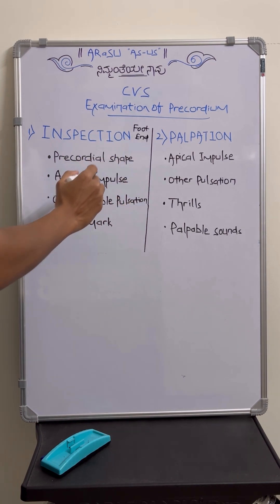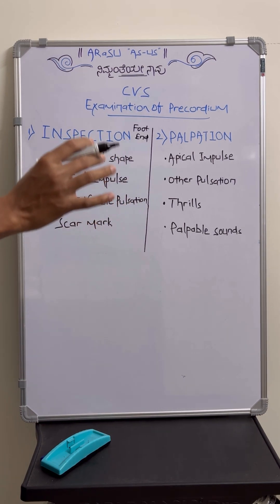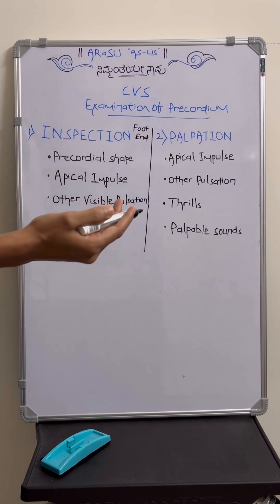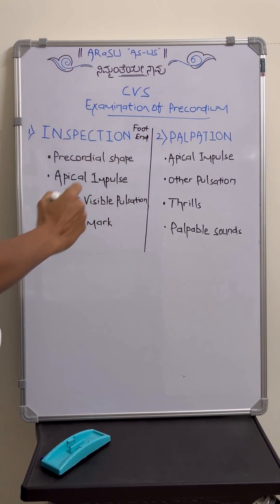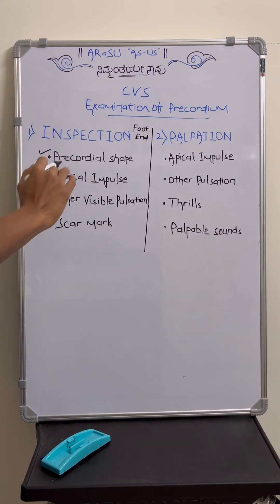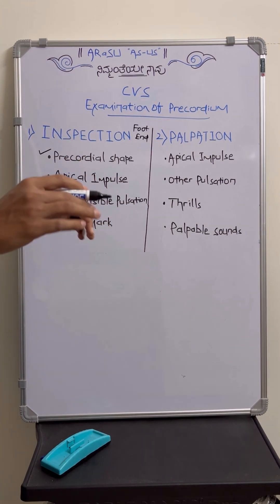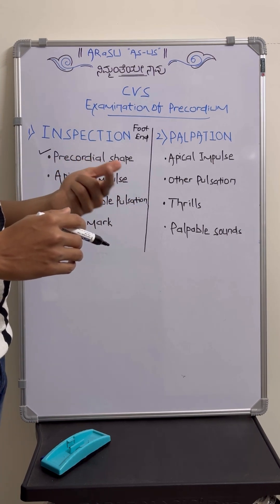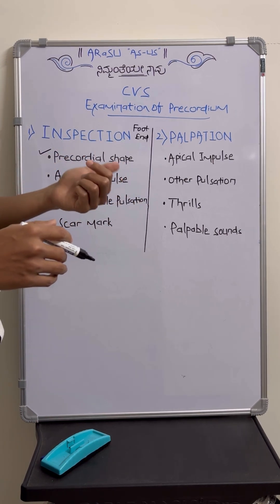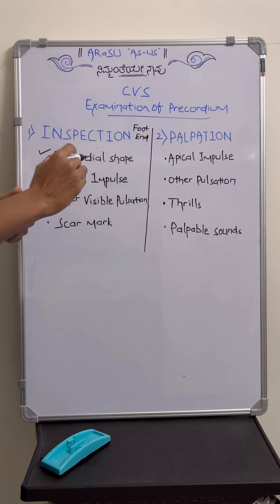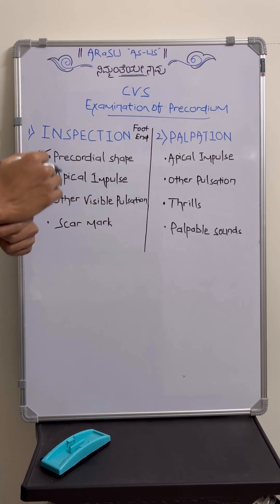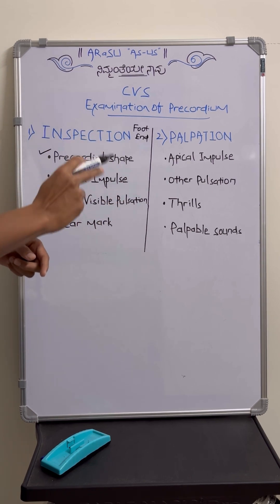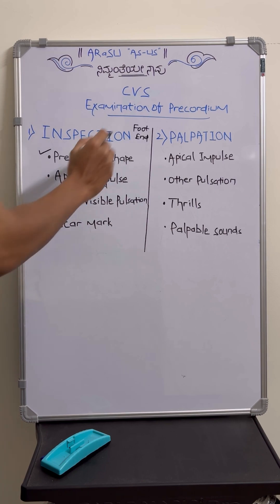Any bulging of the precordium suggests cardiac abnormality before the maturation of the skeletal system — majority of the times you can consider it as childhood onset cardiac disease. Regarding structural changes, for example pectus excavatum or pectus carinatum, these are related to CVS as reasons for ejection systolic murmurs and as risk factors for pulmonary hypertension. Only two things related to pectus changes.